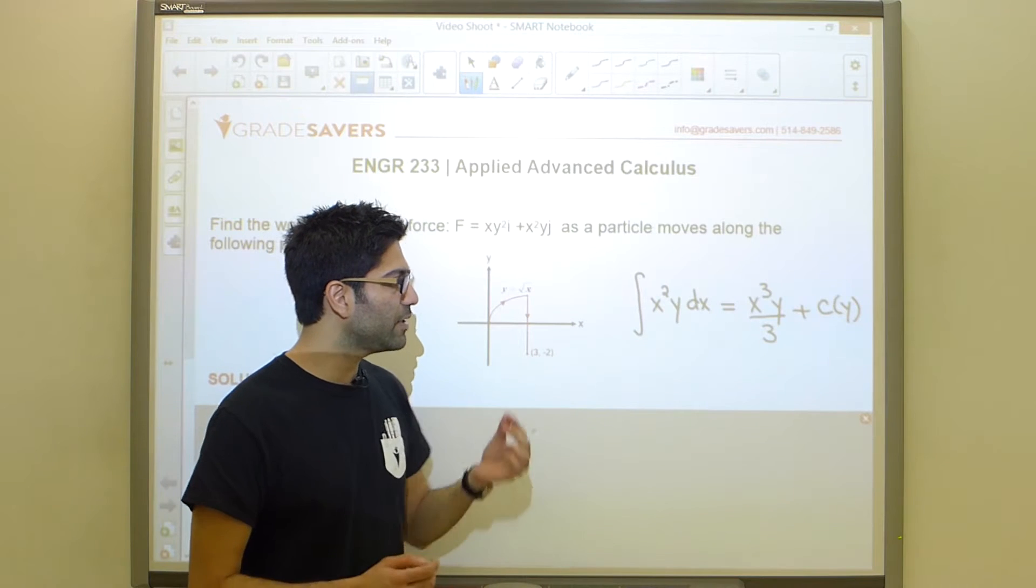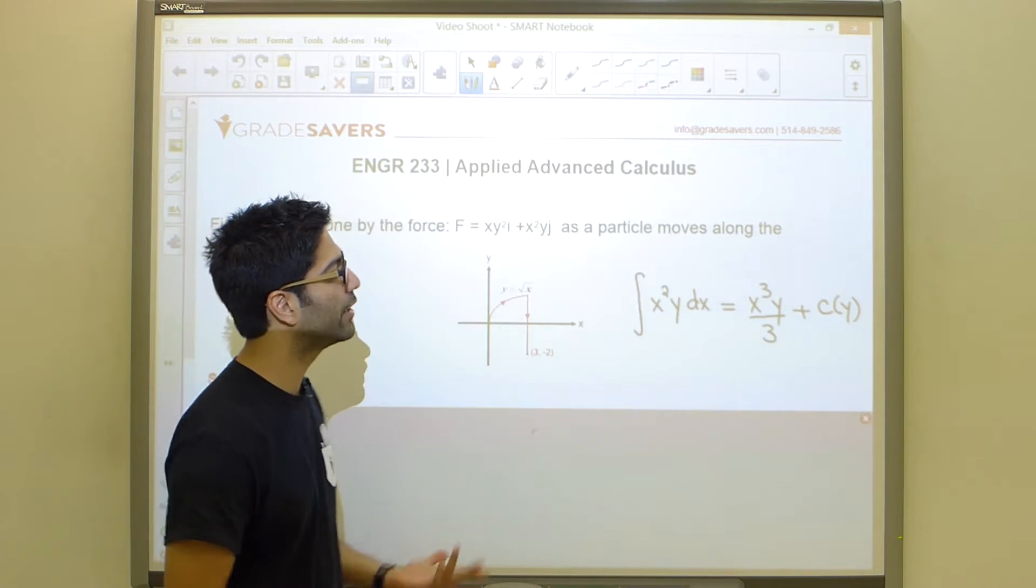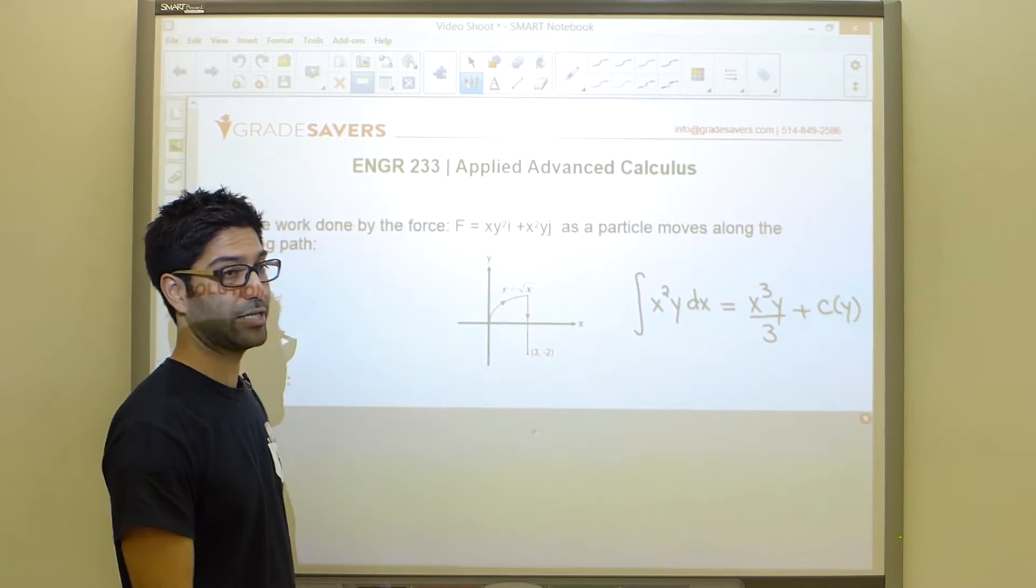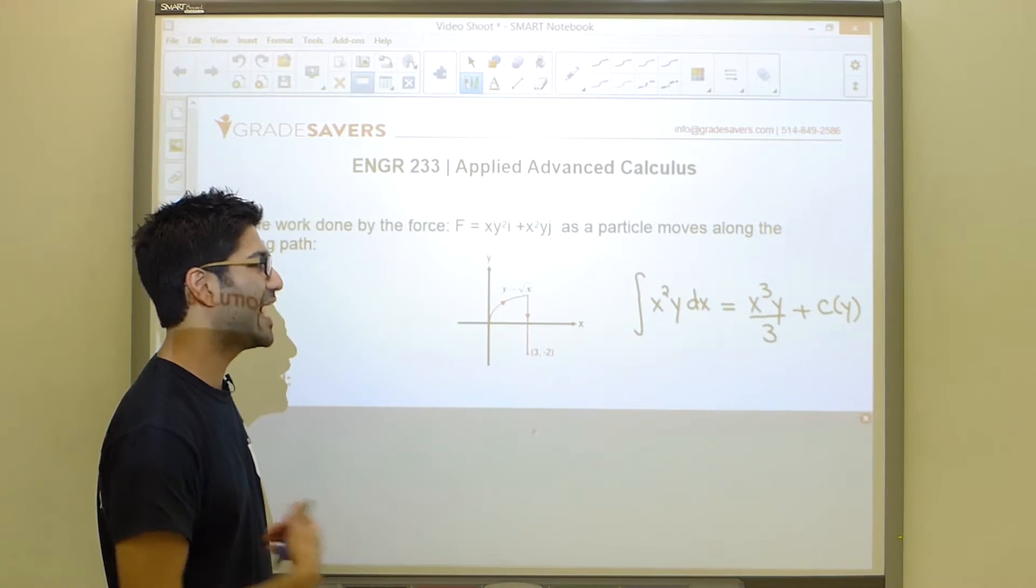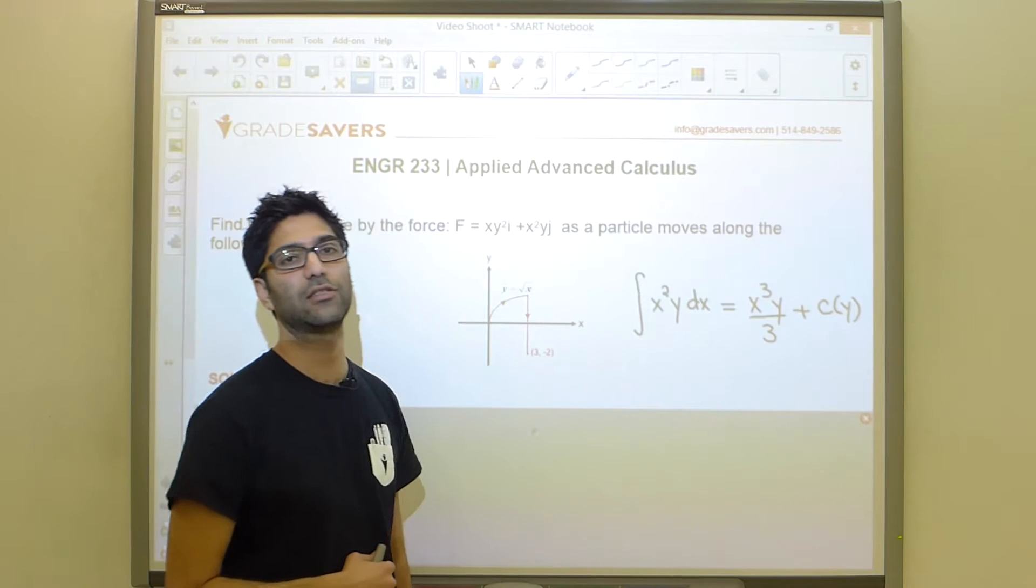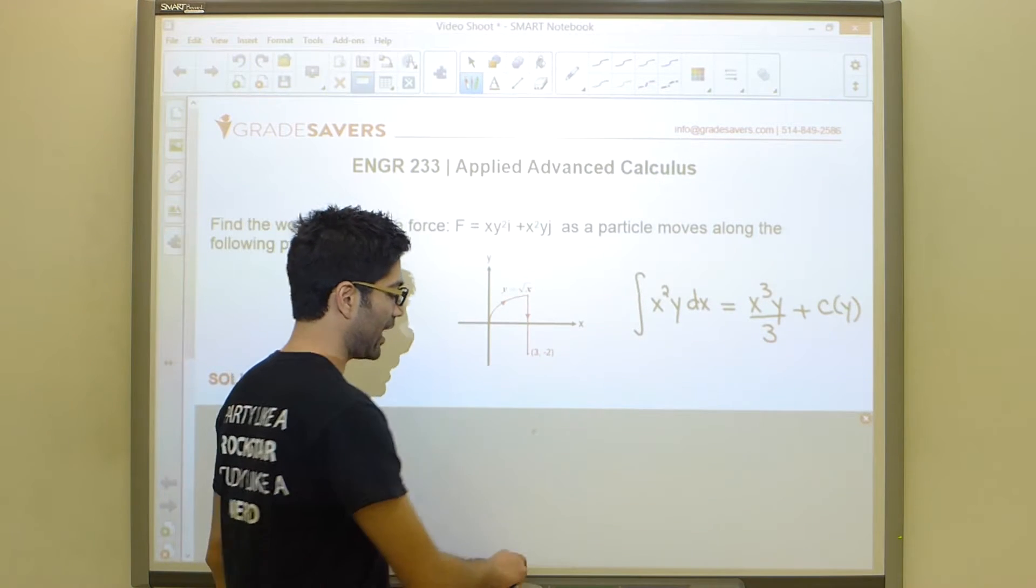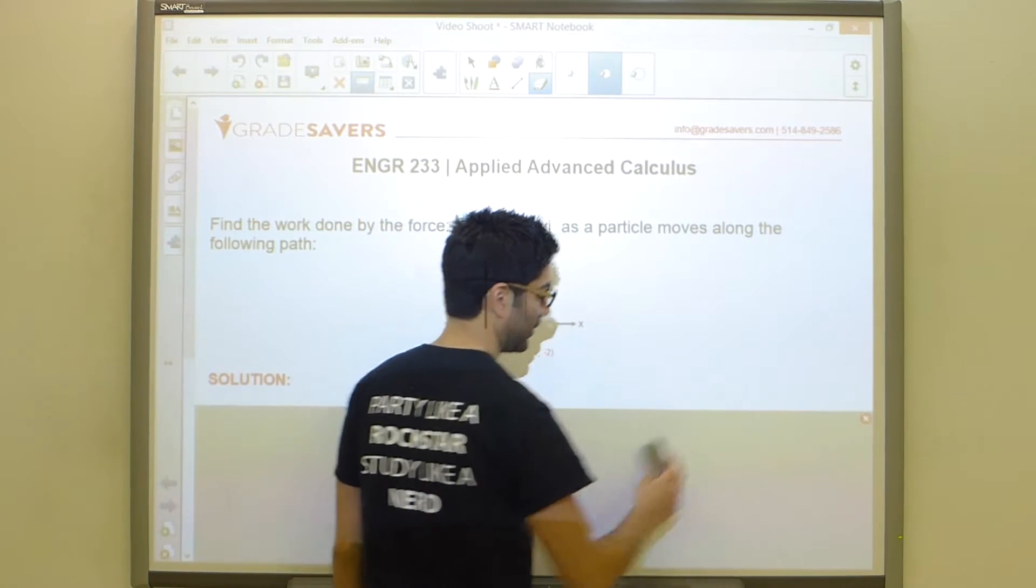However, that is a very particular case, right? In general, y does not need to be constant with respect to x. There can be some sort of a relationship that is not constant between y and x as we see right here. And if that happens, then this is not the correct answer. If y is not a constant with respect to x, then we have to solve this problem in a different way and this is where line integrals kind of come into play.